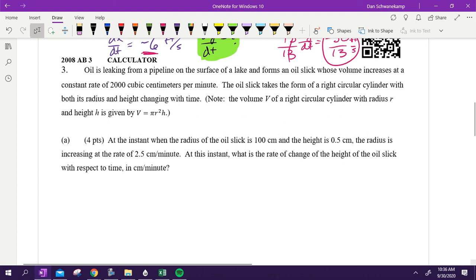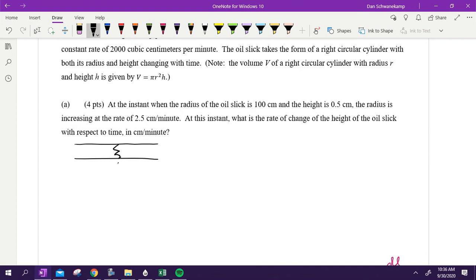Oil is leaking from a pipeline on the surface of a lake and it forms an oil slick where the volume increases at a constant rate of 2,000 cubic centimeters per minute. The oil slick takes the form of a right cylinder with both its radius and height changing with time. This is kind of the dumbest question ever, but it was on the AP exam, so we're going to talk about it. Understand what's happening here. There is a pipe. It's got a crack in it. It is leaking oil into a lake. And what ends up happening is this oil is landing and forming a perfect right cylinder of oil. They measured it. It's perfect. I know that oil and water don't mix, but that's what they're describing is happening. Everybody good to that point.